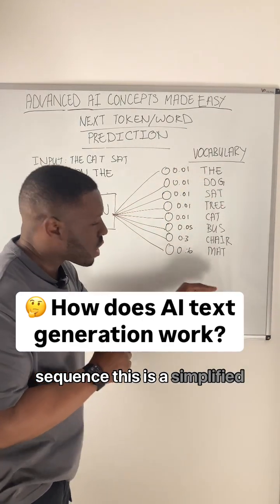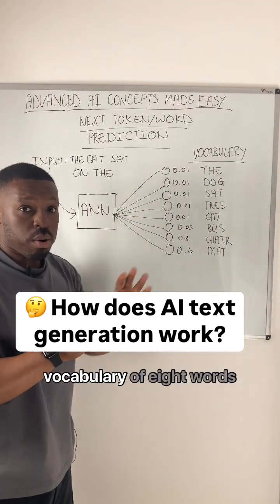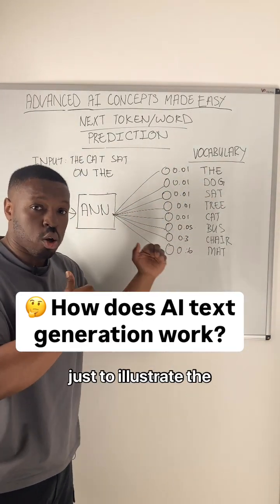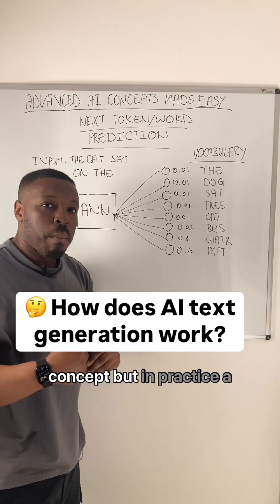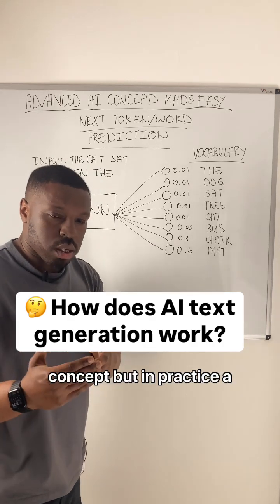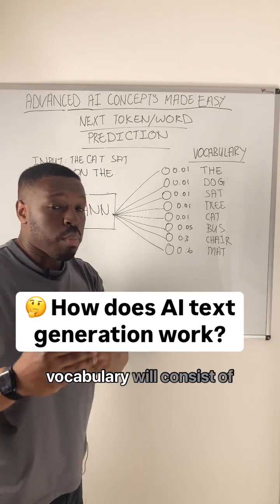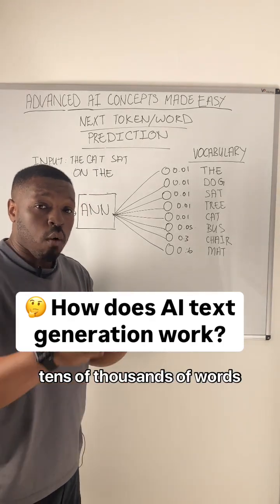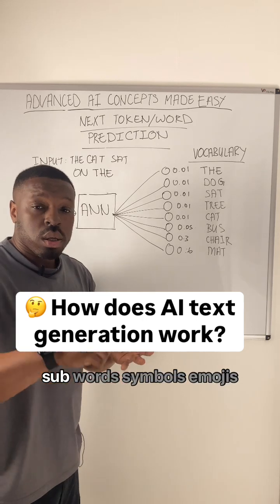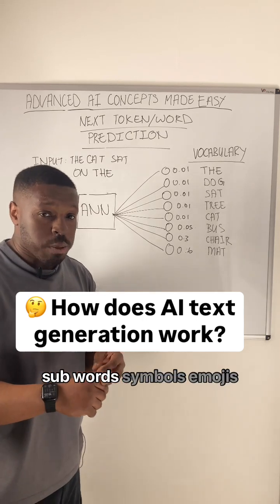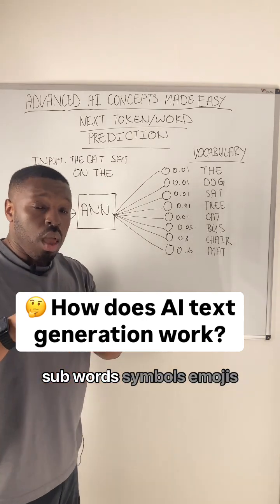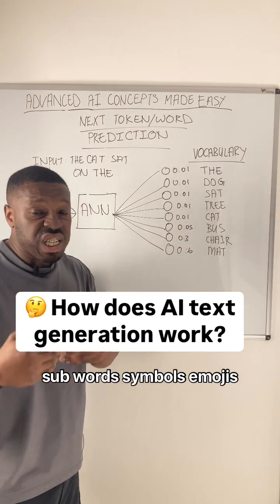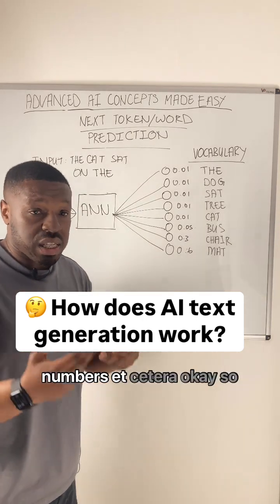This is a simplified vocabulary of eight words just to illustrate the concept, but in practice a vocabulary will consist of tens of thousands of words, sub-words, symbols, emojis, numbers, etc.